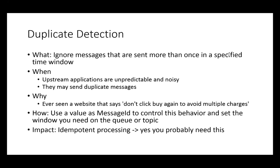The first feature is duplicate detection. I'm really surprised I didn't realize the service had this before. At a high level, it's the ability to ignore messages that are sent more than one time in a specified time window. This comes into play all the time for integration systems. Upstream applications can be unpredictable or noisy — they may send duplicate messages by the nature of their protocol. The classic example is a website that tells you not to click the buy button again so you don't get charged multiple times. This is an easy way to solve that in Service Bus, and all you have to do is use the message ID property of any message — you get this feature for free.